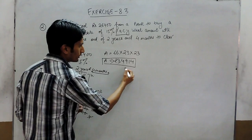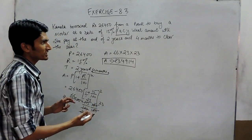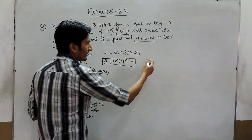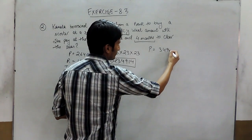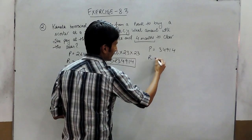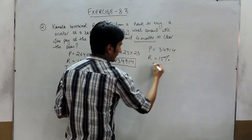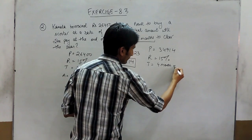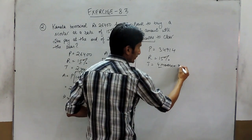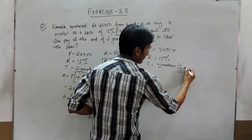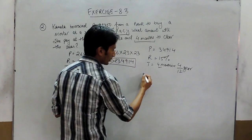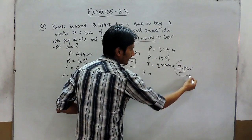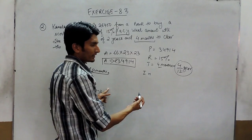Now this amount of 34,914 will act as the principal for the remaining period. The rate is again 15%, and the time is 4 months, which converts to 4/12 year. For this time period, we can simply find the simple interest.